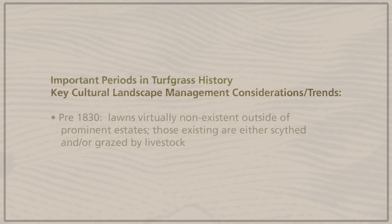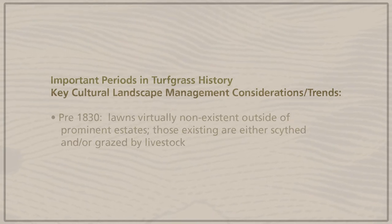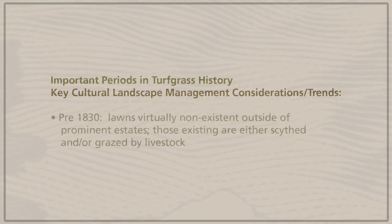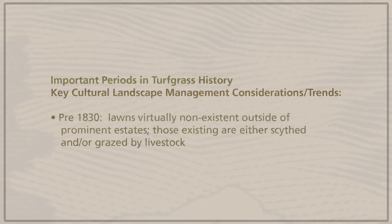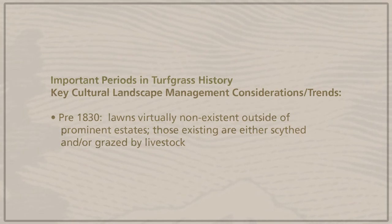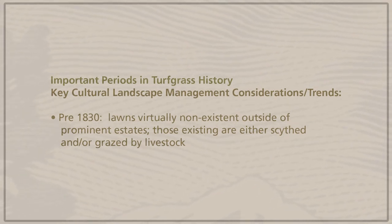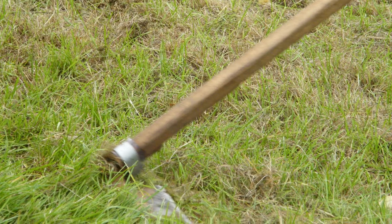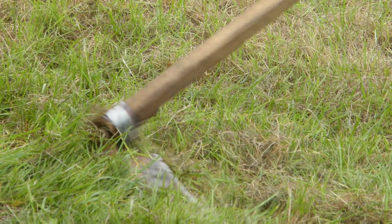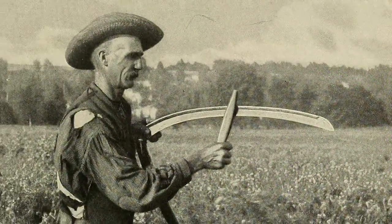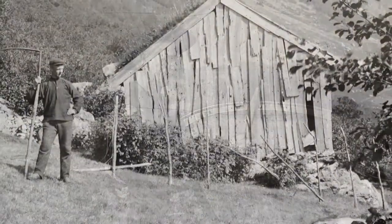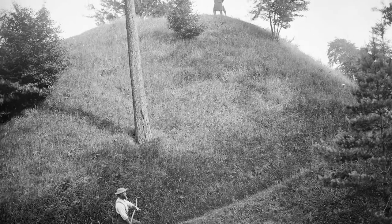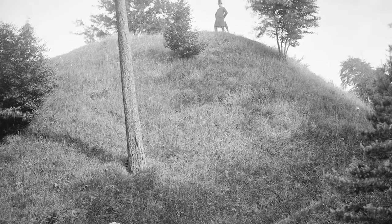For example, pre-1830: if you're working at a historic site with a historic period before 1830, the lawns are virtually nonexistent outside of prominent estates, and those that were existing were either scythed or grazed by livestock. So if you're maintaining a Class A White House–style lawn in a pre-1830 cultural landscape, you're probably not reflecting the authentic character of that site.